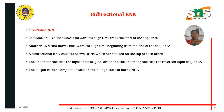Another RNN moves backward through time, beginning from the end of the sequence. A bi-directional RNN consists of two RNNs stacked on top of each other — one that processes the input in its original order, and one that processes the reversed input sequence. The output is then computed based on the hidden states of both RNNs.